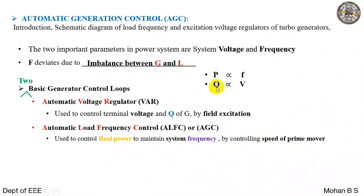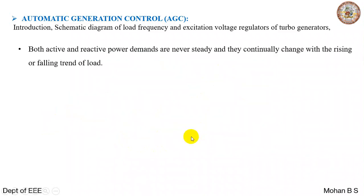So Q and V are controlled using the technique called automatic voltage regulators. P and F are controlled with respect to automatic generation control.